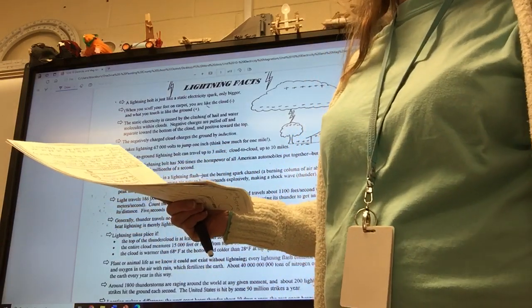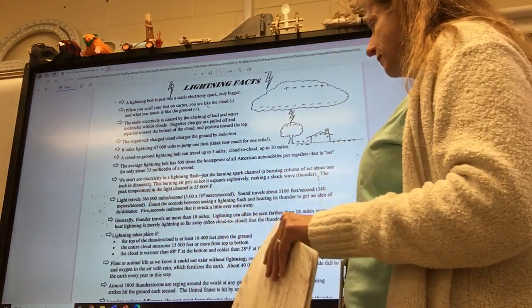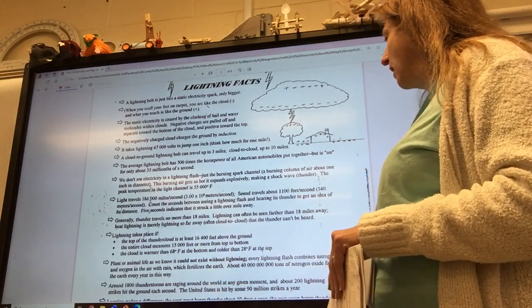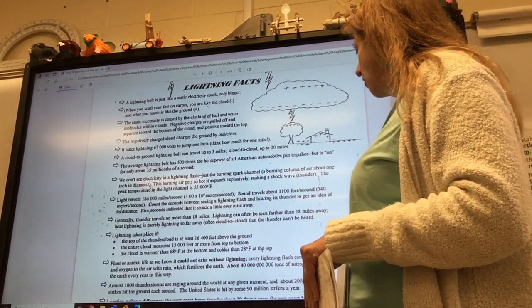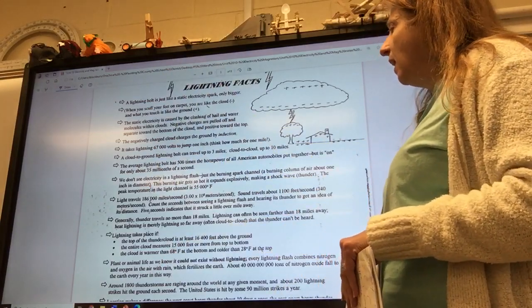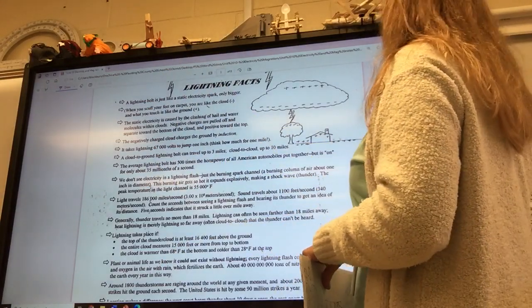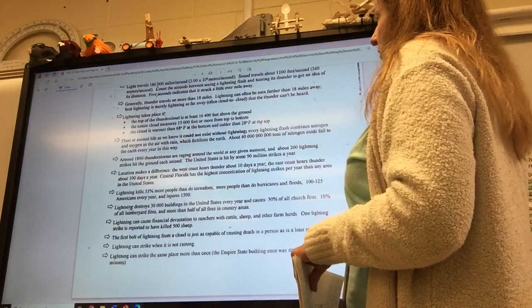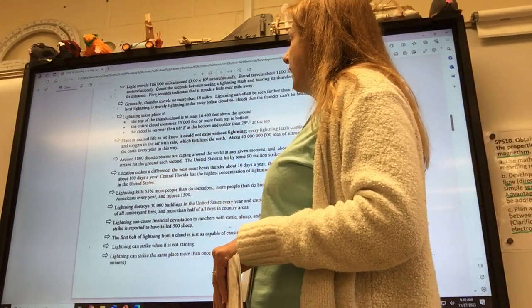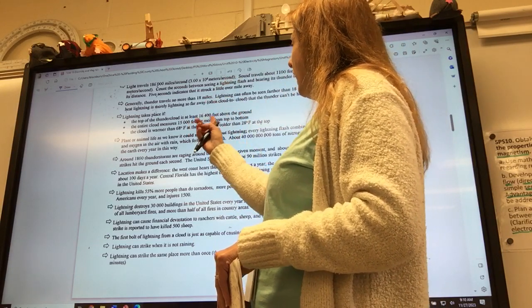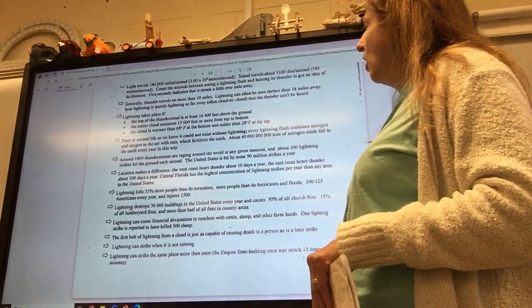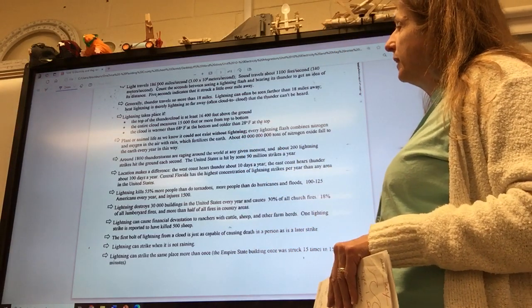The average lightning bolt has 500 times the horsepower of all American automobiles put together. But it's on only about 35 millionths of a second. We don't see electricity in a lightning flash, just the burning spark channel, a burning column of air about one inch in diameter. This burning air gets so hot it expands explosively, making a shockwave, the thunder. The peak temperature is 55,000 degrees Fahrenheit.